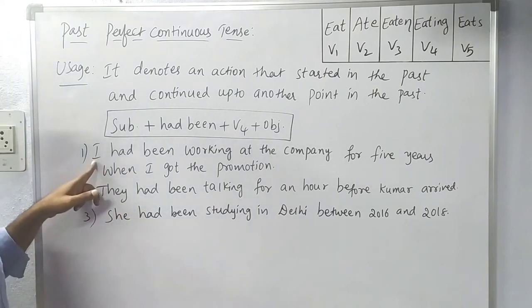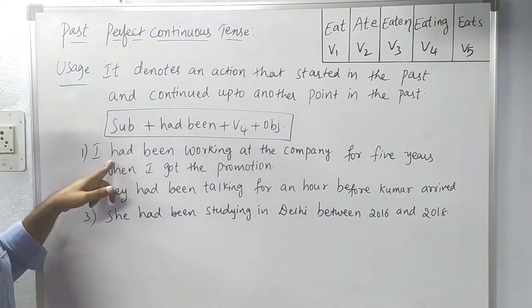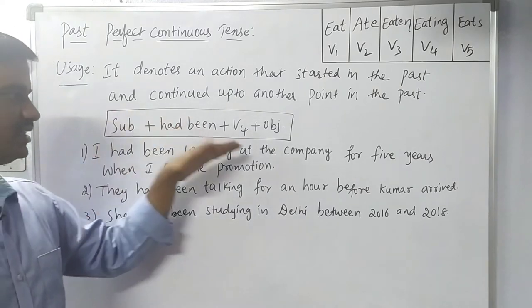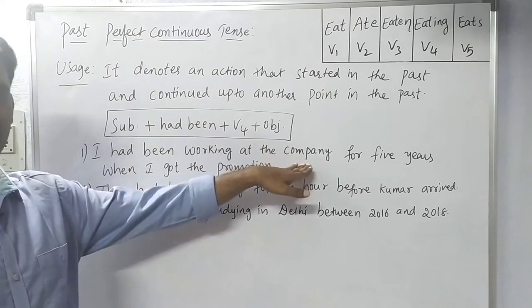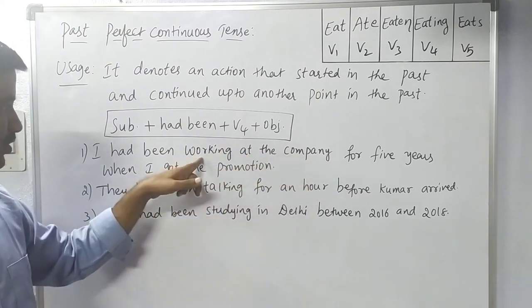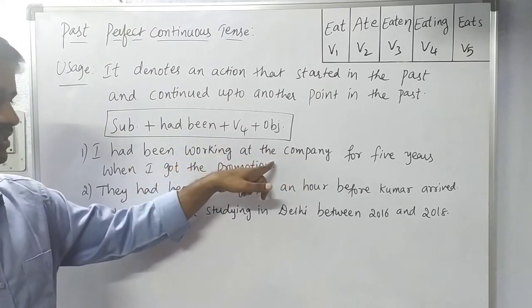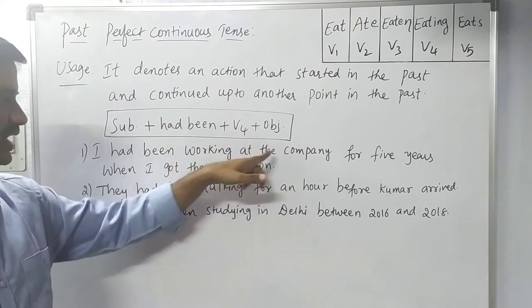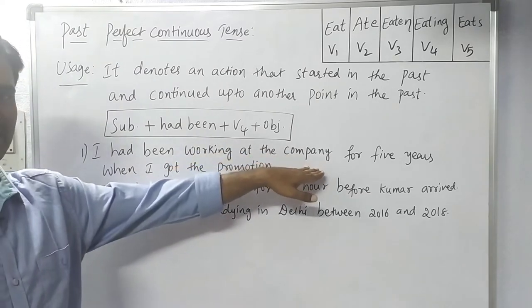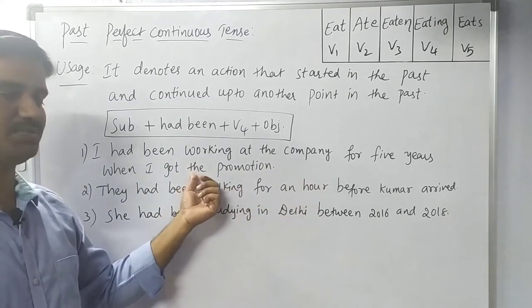So here it is: the action has a start and it continues, and the end is the point in the past where the next event occurs.